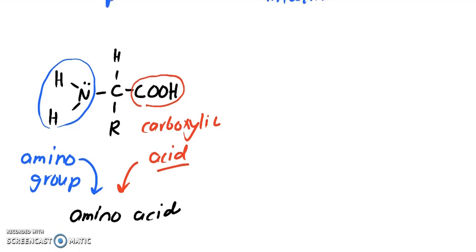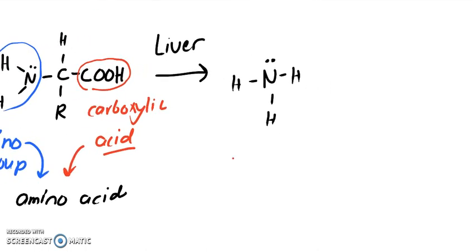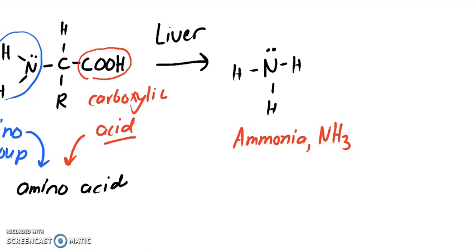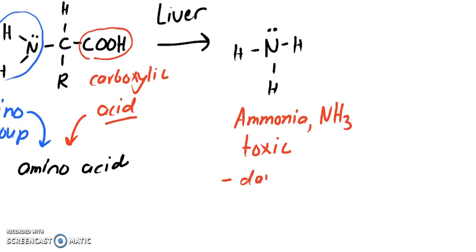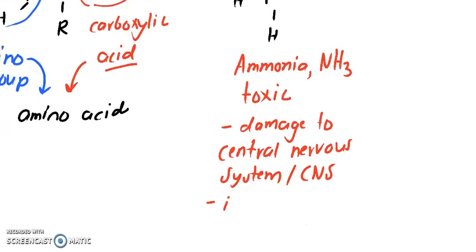So we have this amino acid structure. Your liver is going to metabolize this — keep that amino group in mind. Your liver is going to produce something called ammonia, which has three hydrogens attached and a lone pair — NH3. Too much of this is toxic to our bodies. It can cause damage to the central nervous system (CNS).